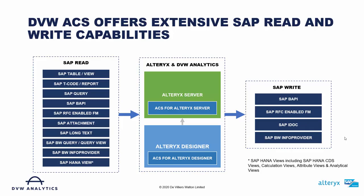We also can work with attachments — so these are PDFs, Word documents, image files, and text files linked to master data or transactional data objects within the SAP system. The SAP attachment capability allows us to identify where objects have attachments, extract those attachments into Altrix, and then recompile those original files into a location where they can be reviewed.